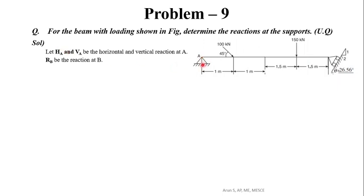Since it is a hinge support, the reaction will be inclined. The components are HA and VA — the horizontal component is HA and the vertical component is VA. We assume RB as the reaction at B.